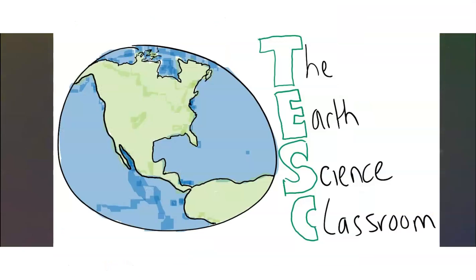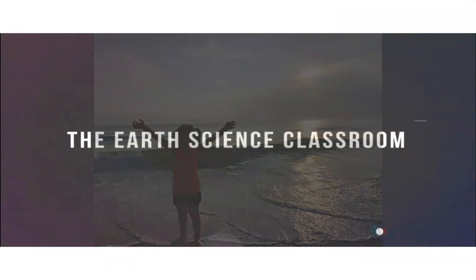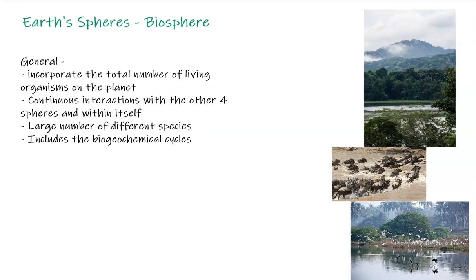The biosphere in general refers to the total number of living organisms on the planet — the whole system added up, all the different species. It involves constant and continuous interactions with the other four spheres: the hydrosphere, atmosphere, cryosphere, and geosphere. Those constant interactions are going on all across the planet with all the different species, and also within the biosphere itself — how animals interact with each other, within the division of ecology and symbiotic relationships.